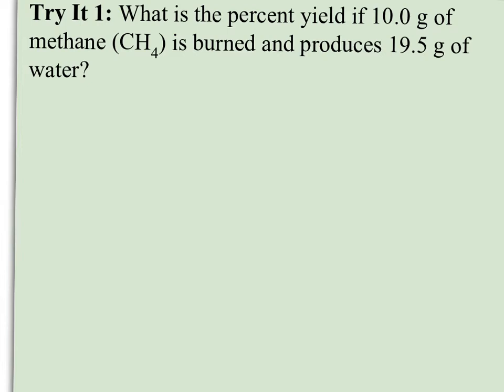So for my first problem for you to try, it says, what is the percent yield if 10 grams of methane is burned and produces 19.5 grams of water? Now you have to be careful here because 10 grams of methane is my reactant, but 19.5 grams is my water. So this is my actual yield. 10 grams is not my theoretical yield. That's my starting amount of reactant. So I need to do several things here.